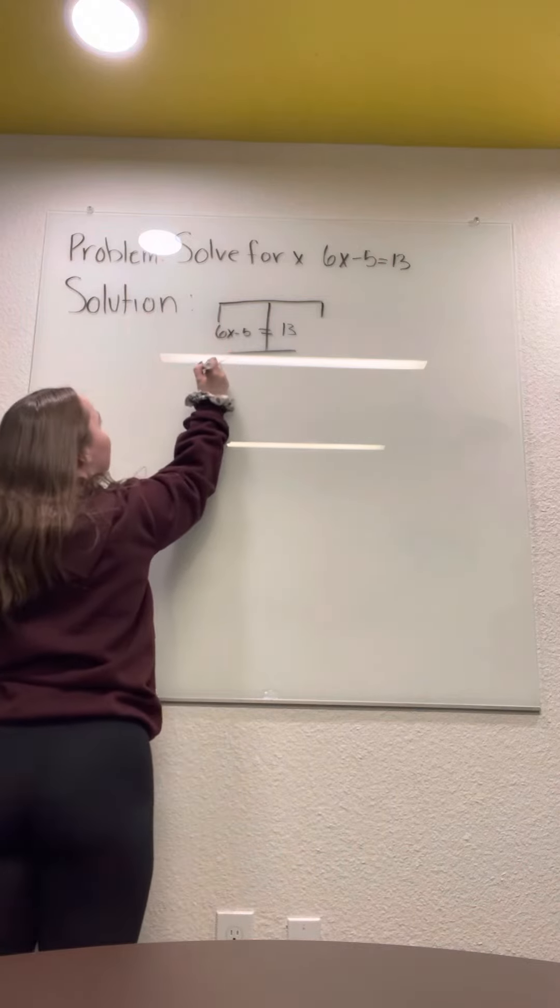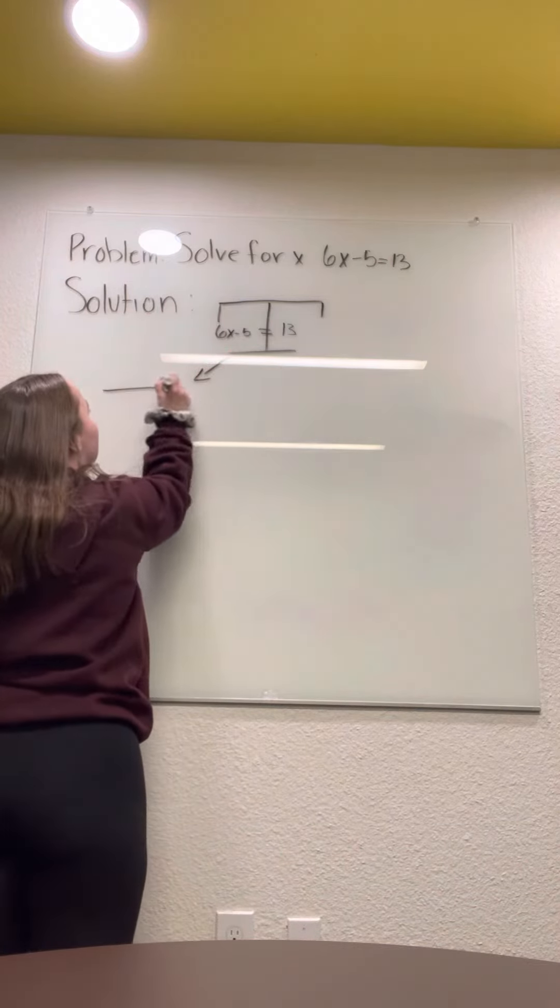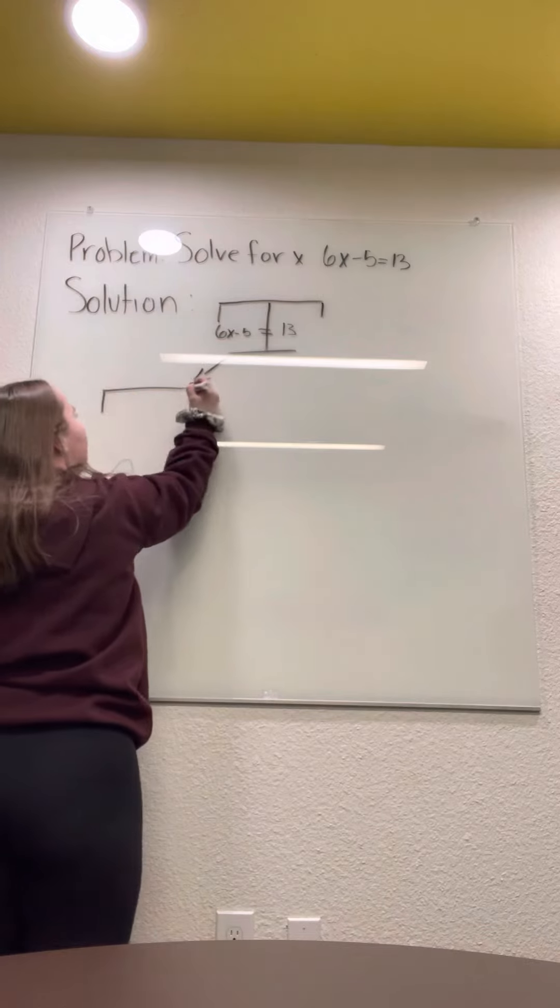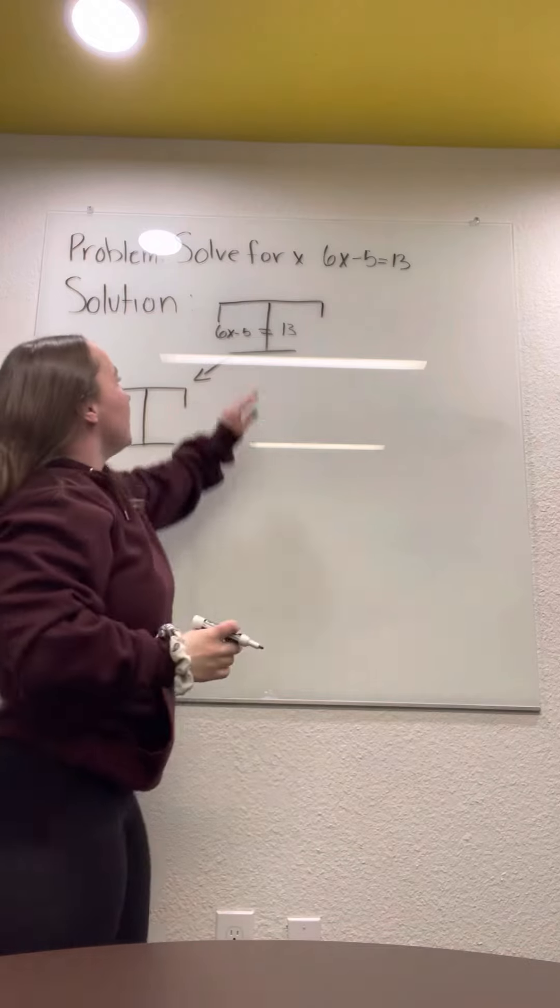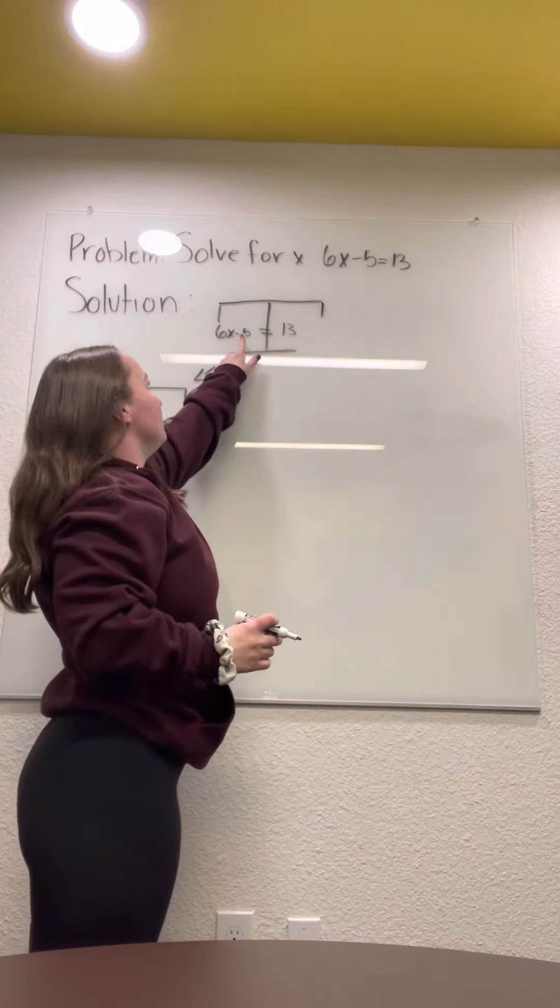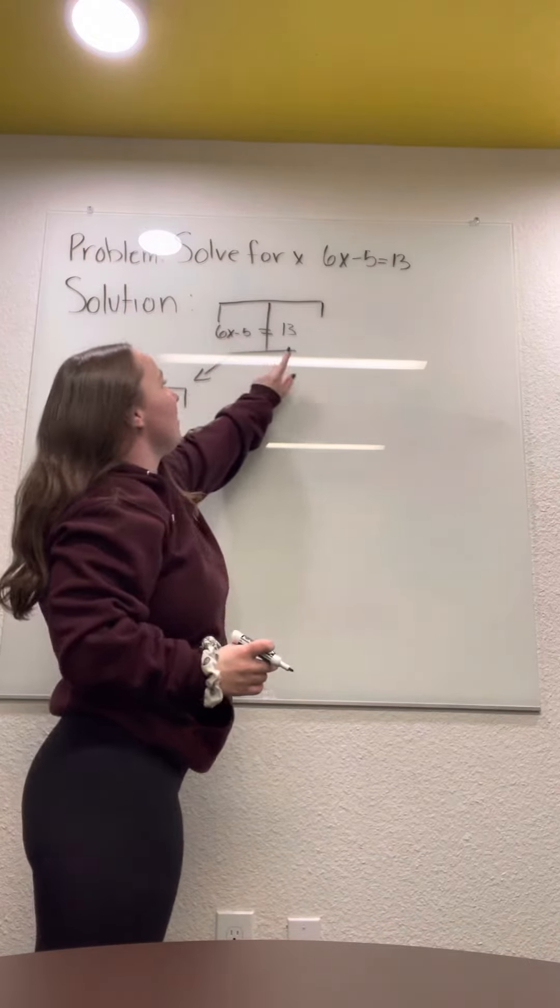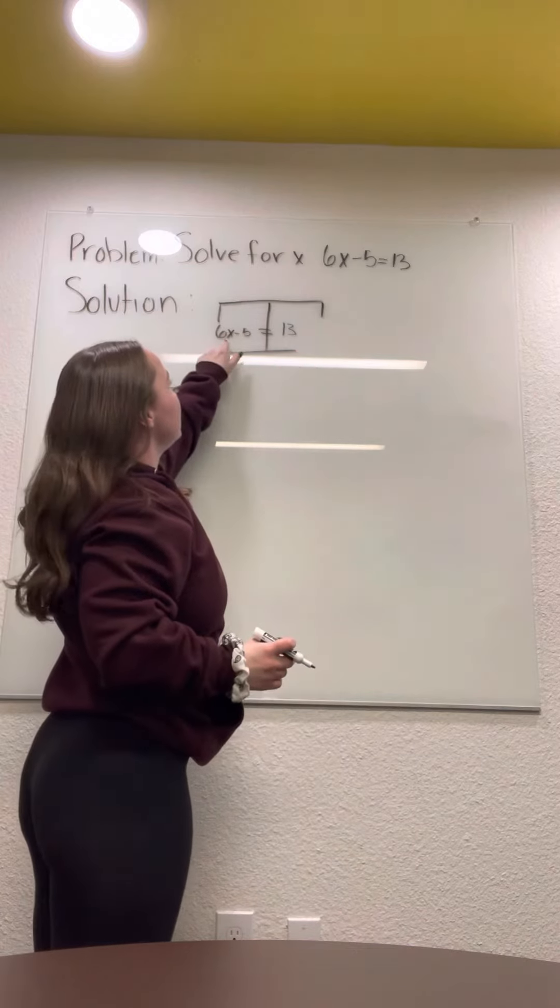Then we bring it down, we do another little way thing. And then we are going to want to put the minus 5 on this side so we can get the 6x alone.